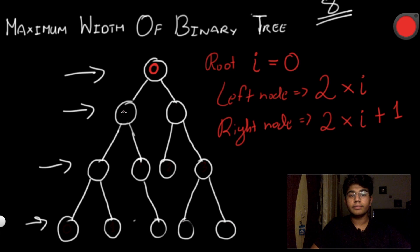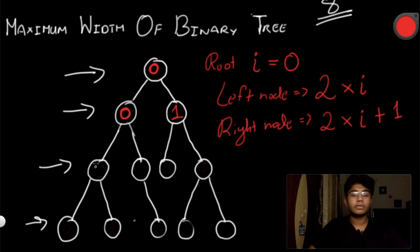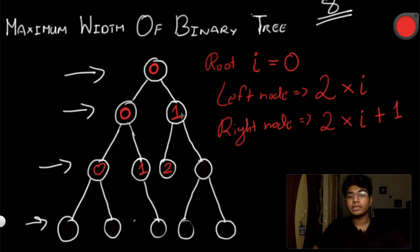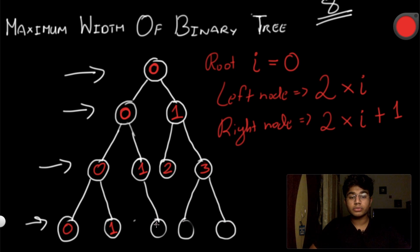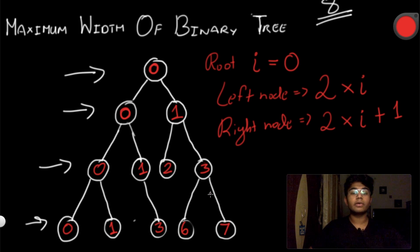Let's see how that looks in our binary tree. The root node has a value of zero. Two times zero is zero, so the left child has a value of zero. For the right node, two times zero plus one equals one. Going down: two times one is two, and two times one plus one is three. At the next level: two times zero is zero, two times zero plus one is one. Since we only have a right node there, we do two times one plus one, which is three. Then two times three is six and two times three plus one is seven.